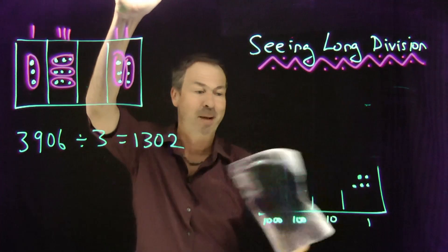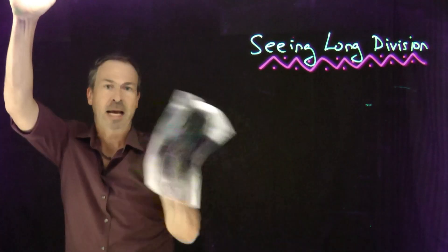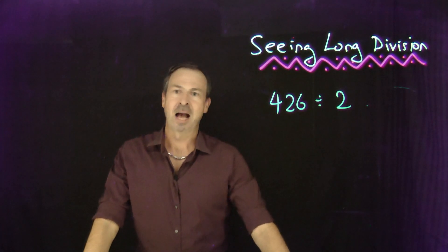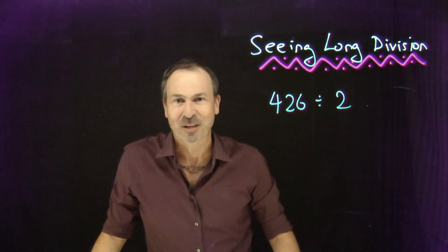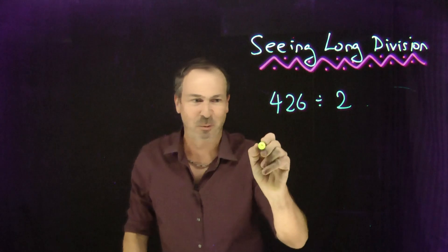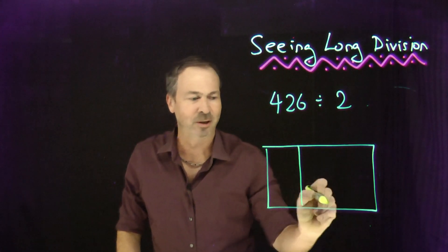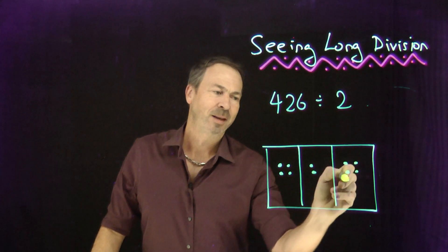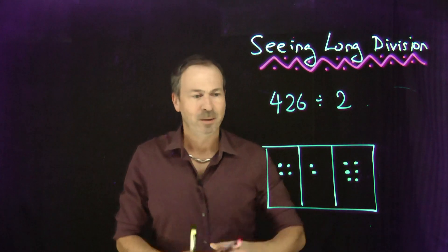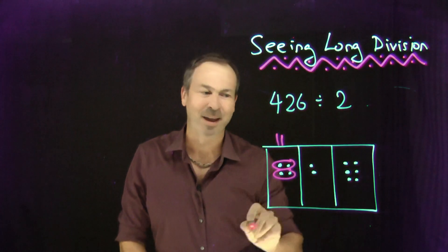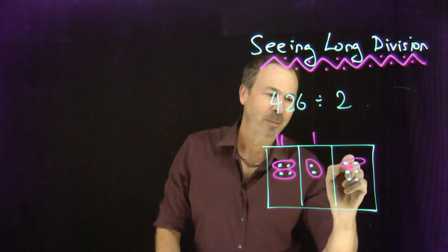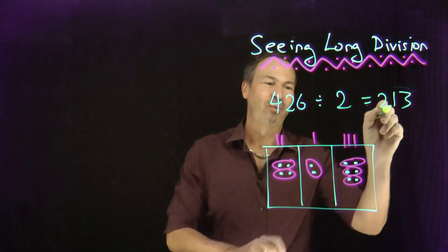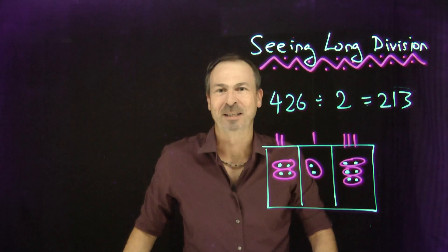Let's practice some more with another example: 426 divided by 2. What got doubled to give the answer 426? The answer is 213. Let me literally see it. Looking for doubles — here's a dot that got doubled, one there; another dot doubled, one there; another, one there; and three dots there got doubled at the ones level. Two at the hundreds level, one at the tens level, three at the units level got doubled to give that picture of 426. Beautiful.